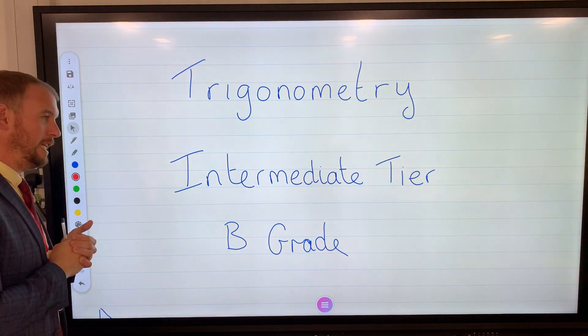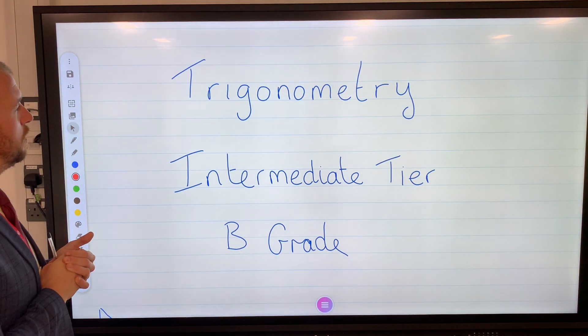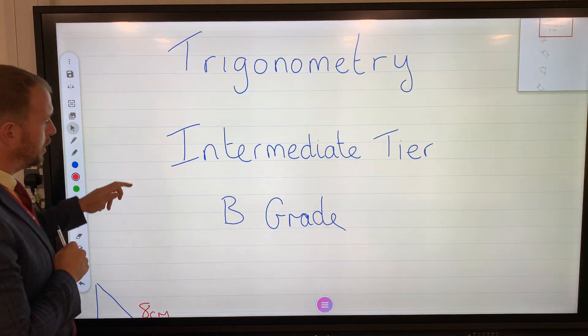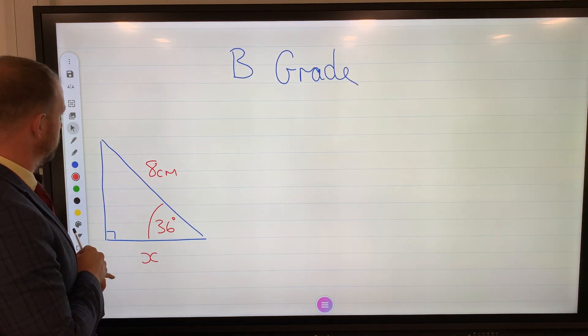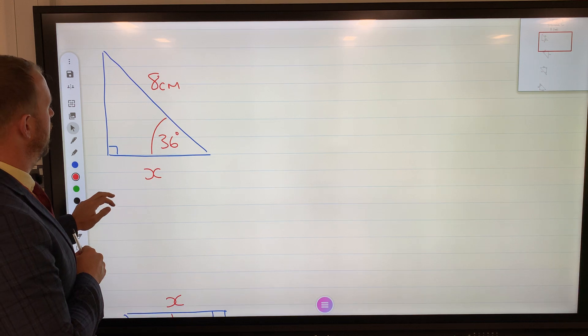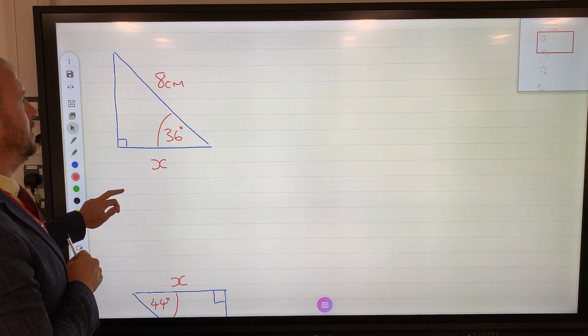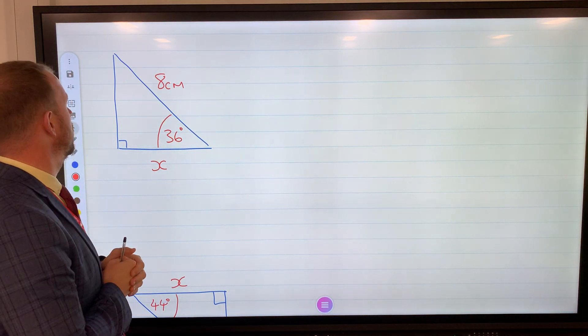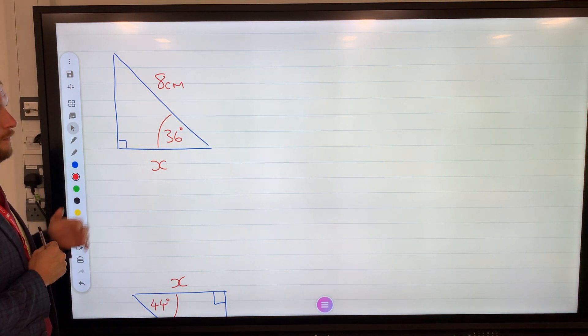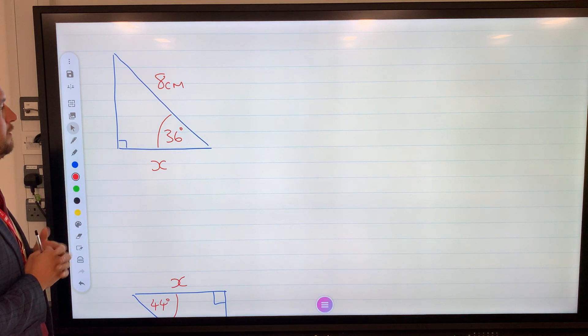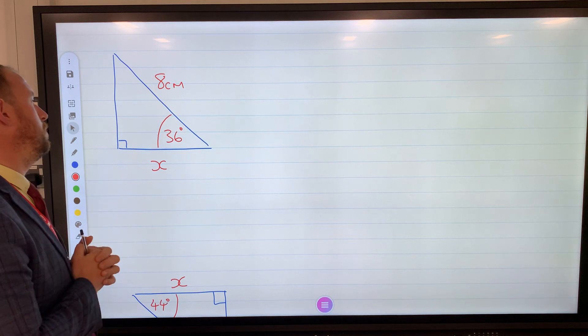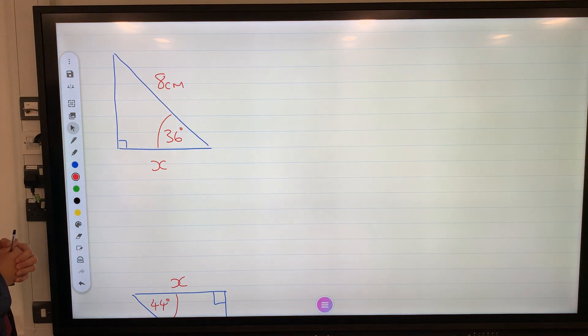Okay, so trigonometry intermediate tier, and it is on the B grade for the top end of intermediate tier. Now trigonometry is one of those topics where when it comes to the end of year 11, this is the main topic that I get asked about - I get 'can you help me with this, I'm really struggling.' And there's just following a few steps. It might seem a bit alien to a few people, but if you just follow the steps then we definitely have a better chance of getting the correct answer.